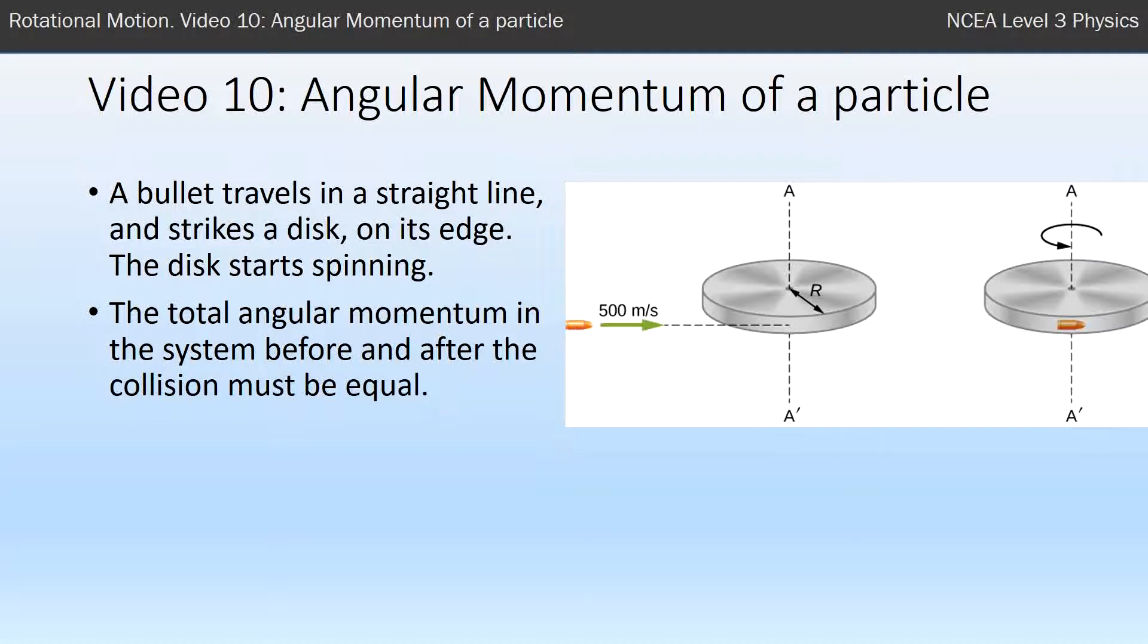Now we just learned in video 9 that the total angular momentum in a system is conserved. That means the total angular momentum before and after the collision is equal.